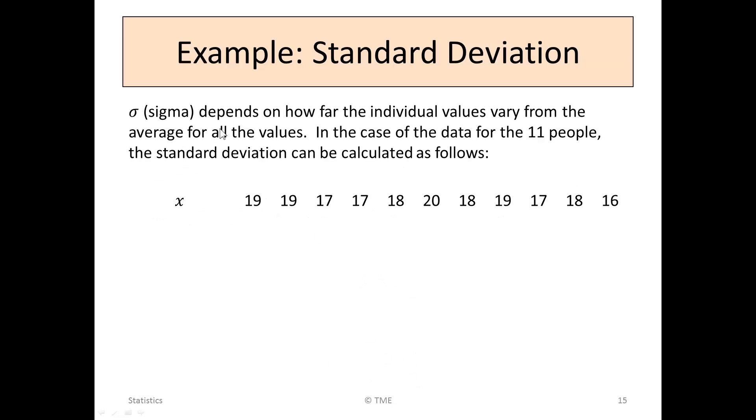To do that, sigma depends on how far individual values vary from the average of all the values. So in the case of the 11 people, the standard deviation can be calculated as follows. We'll write the x values, the 11 values, out in order like this. They're the 11 individual values.